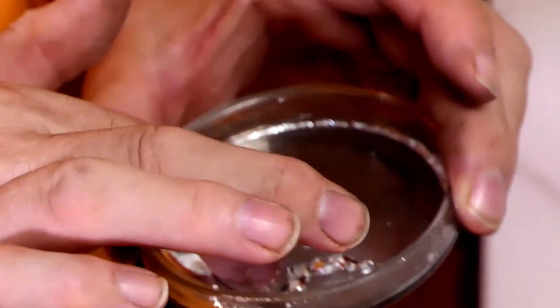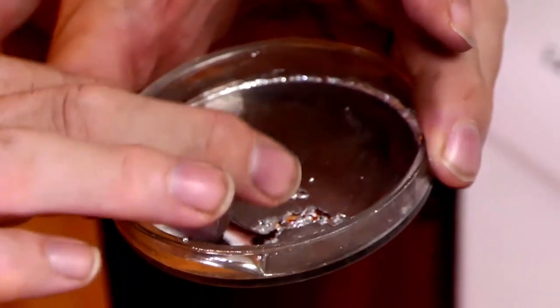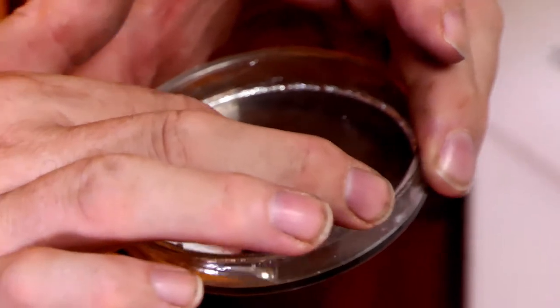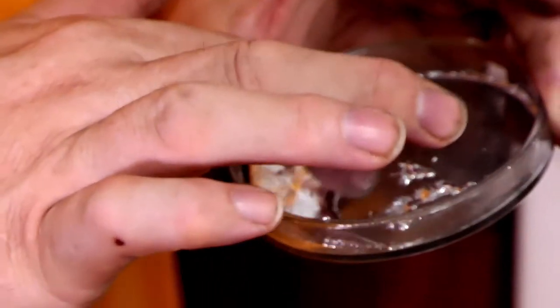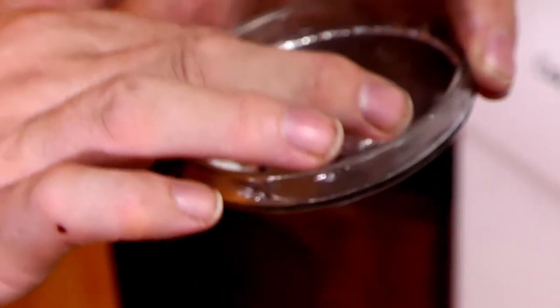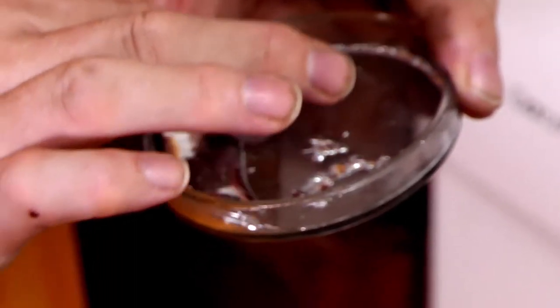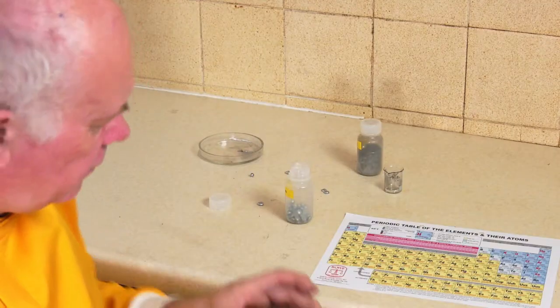I need to perhaps warm the gallium up a little bit more to try and get it to melt. That's because in the house here, it's about 25 centigrade and this needs 29 centigrade. So we are looking at the gallium freezing.